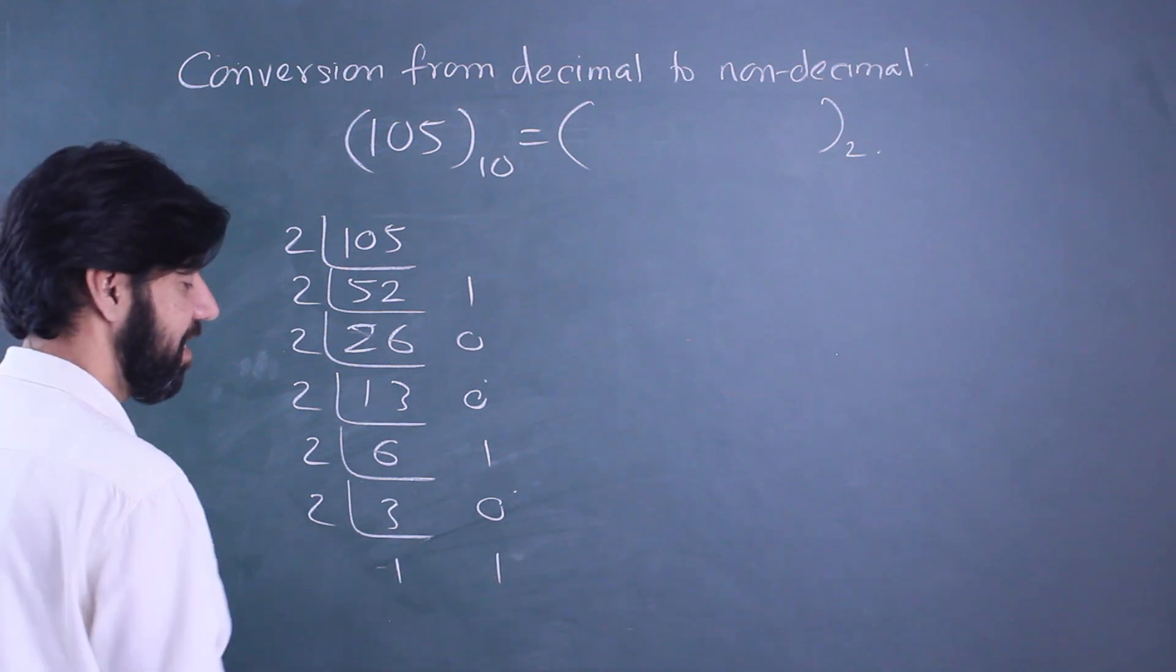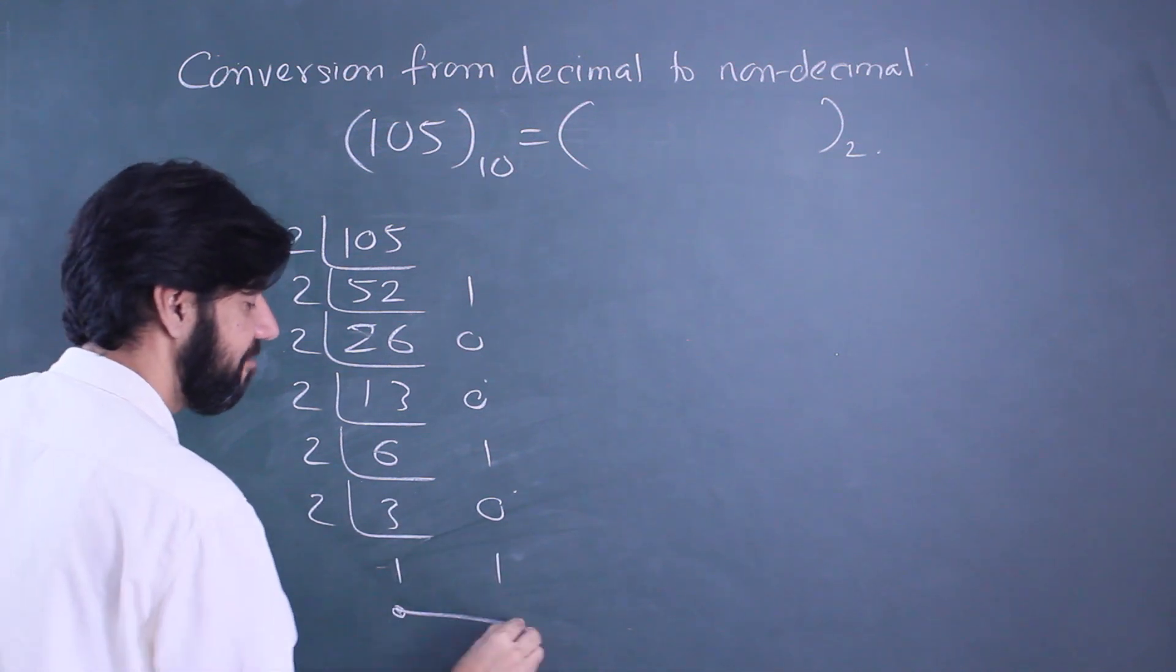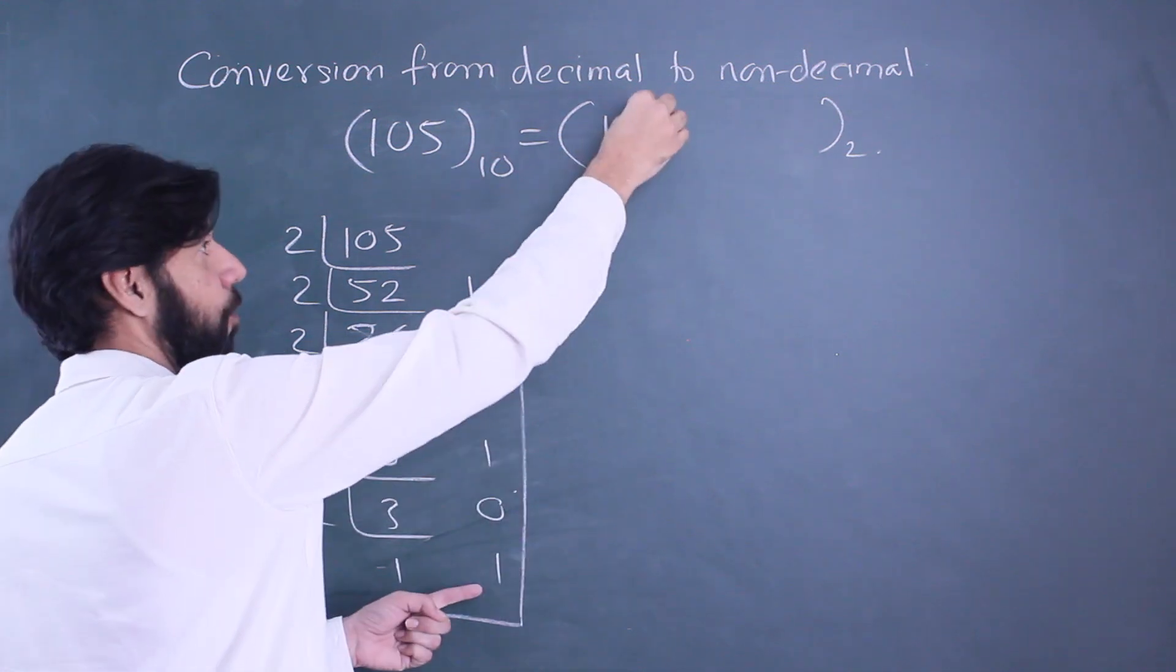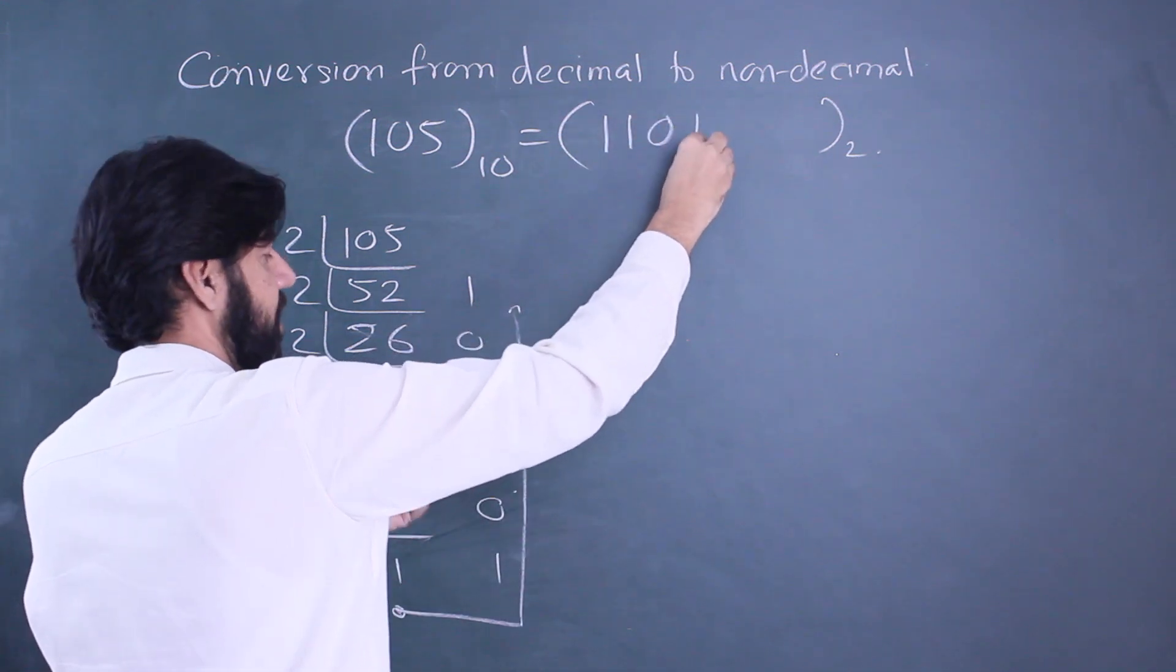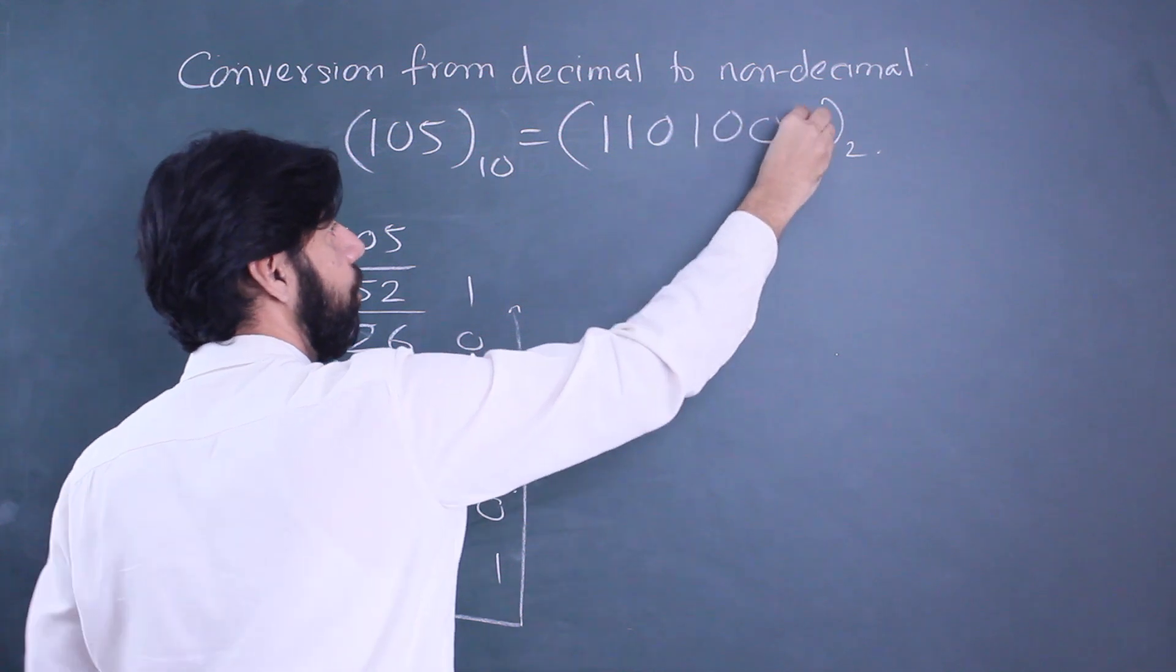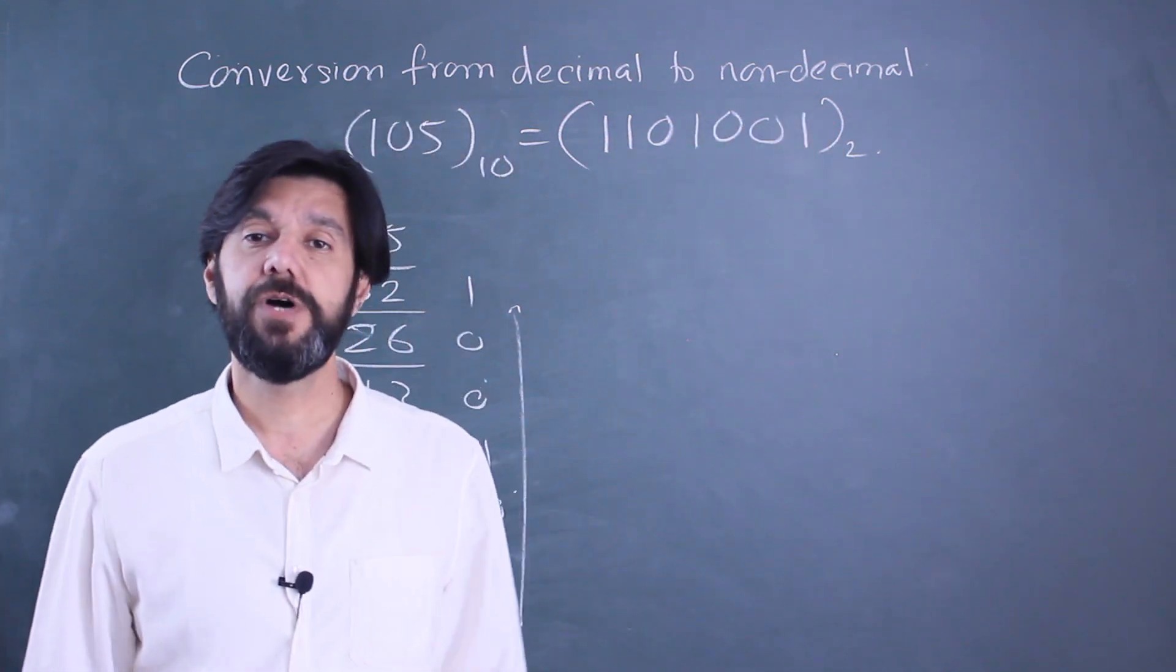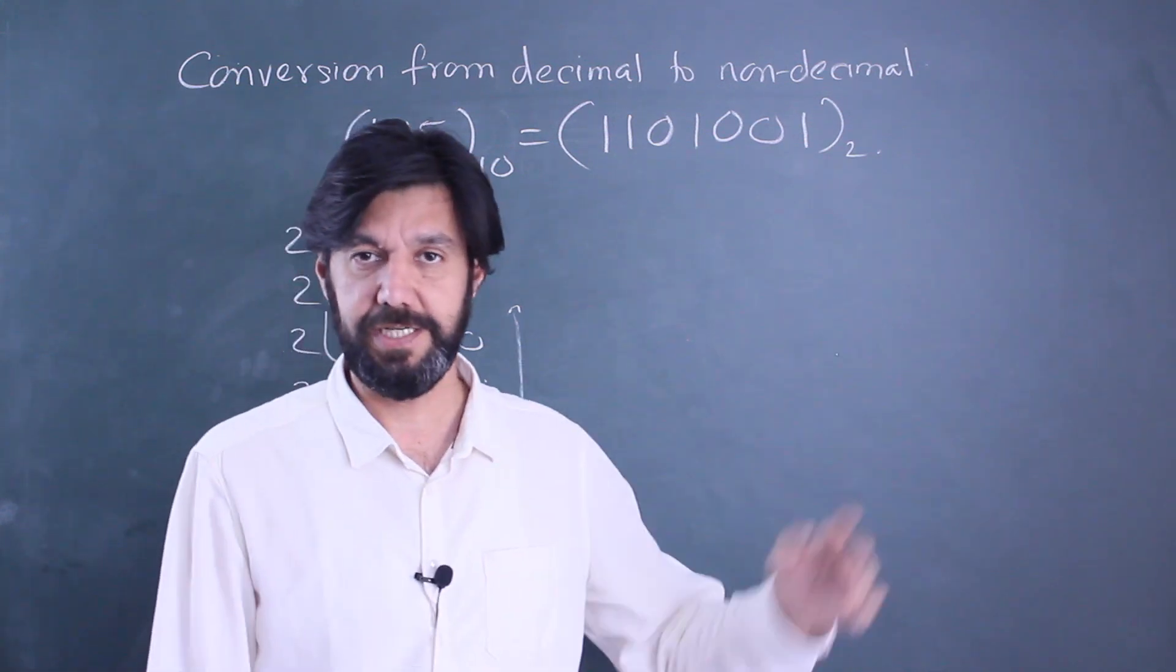When you divide by 2: 2 threes are 6, remainder 0. Divide by 2: 2 ones are 2, remainder 1. Stop. Go in the reverse order, so starting from this: 1101001. Now I'll leave this on the board because hereafter we'll do a logical way of how we do this. Watch it.